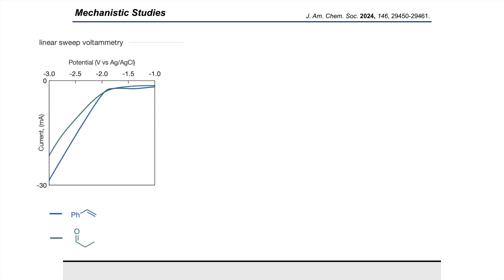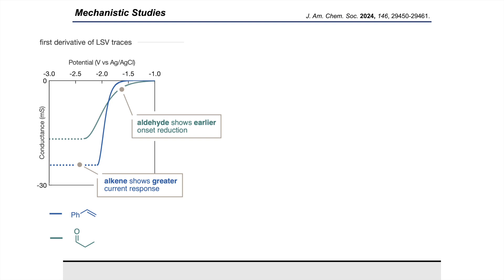Here's the same linear sweep voltammogram that I showed earlier of styrene and propionaldehyde. Upon face value these two traces may be considered somewhat similar, but what we became really interested in was the rate of reduction. So we re-plotted these as their respective first derivatives, and now these two traces appeared profoundly different in two key areas. Early on it could be argued that the aldehyde component showed an earlier onset reduction potential, implying that its reduction is slightly thermodynamically favorable. But in the overpotential region we observed the alkene showed a much greater current response. This same trend was observed in heterocycles. Since these reactions were run at deep applied potentials to access these intermediates, we suggested that there might be a kinetic bias toward olefin reduction over aldehyde reduction.